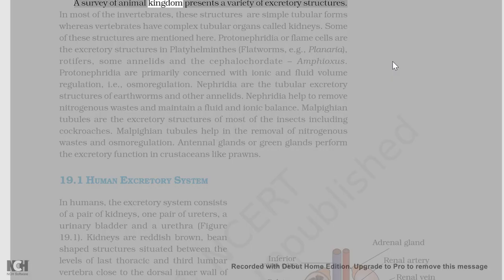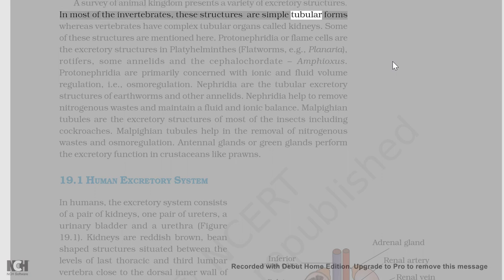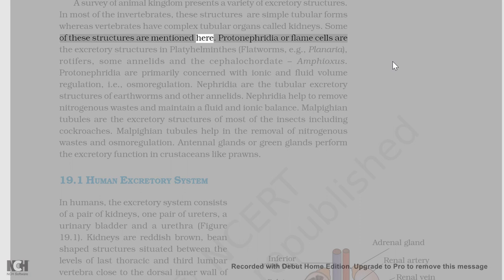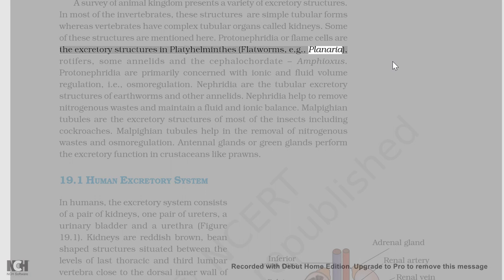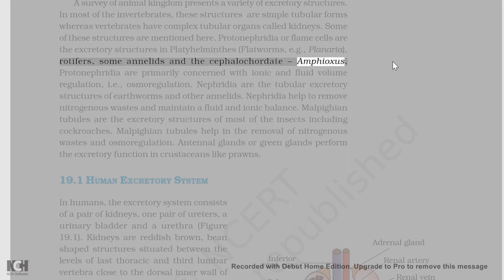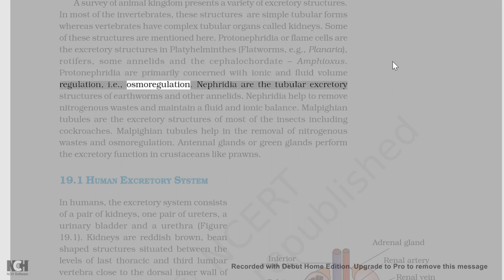A survey of the animal kingdom presents a variety of excretory structures. In most of the invertebrates, these structures are simple tubular forms whereas vertebrates have complex tubular organs called kidneys. Protonephridia or flame cells are the excretory structures in platyhelminthes, flatworms, e.g., planaria, rotifers, some annelids, and the cephalochordate amphioxus. Protonephridia are primarily concerned with ionic and fluid volume regulation, i.e., osmoregulation.